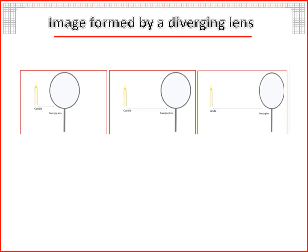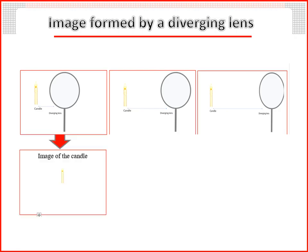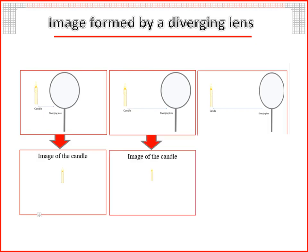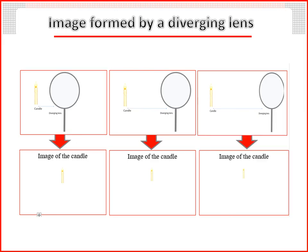Image formed by a diverging lens: we observe a candle through a diverging lens at different distances as shown in the figures. In the first figure, the size of the image is smaller than the size of the candle and the image is erect. In the second figure, the size of the image is also smaller than the size of the candle and the image is erect.